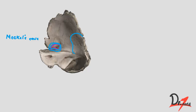This ganglion is attached to the pons by a thick sensory root. A small motor root arises from the pons just medial to the sensory root and passes deep to the ganglion — not entering it — then enters the foramen ovale and joins the mandibular nerve just below the base of skull. That is why the mandibular nerve has both sensory and motor roots, while the ophthalmic and maxillary divisions have only the sensory root.